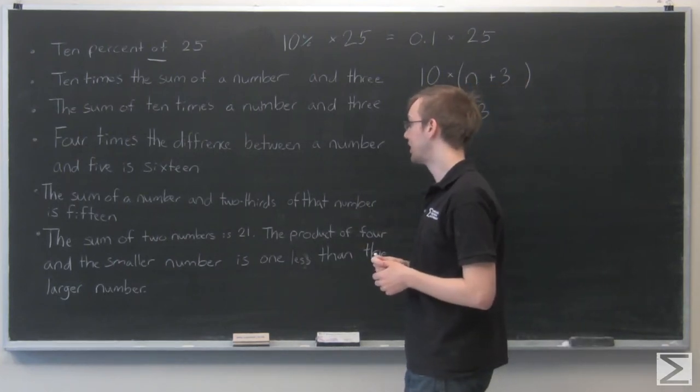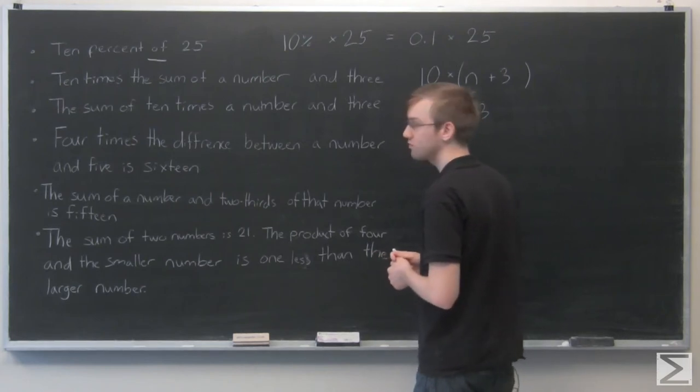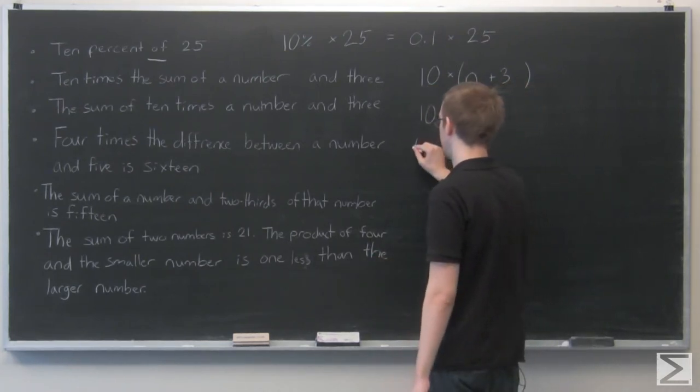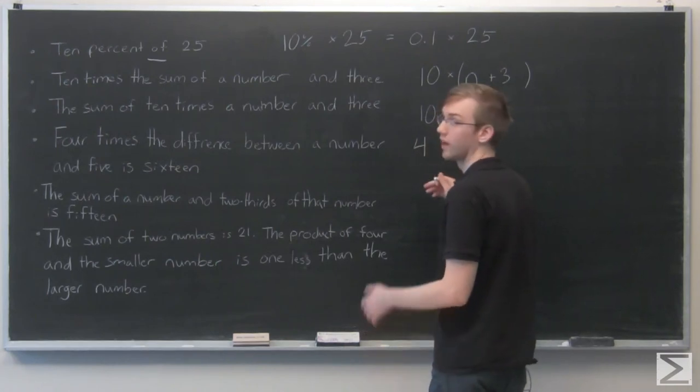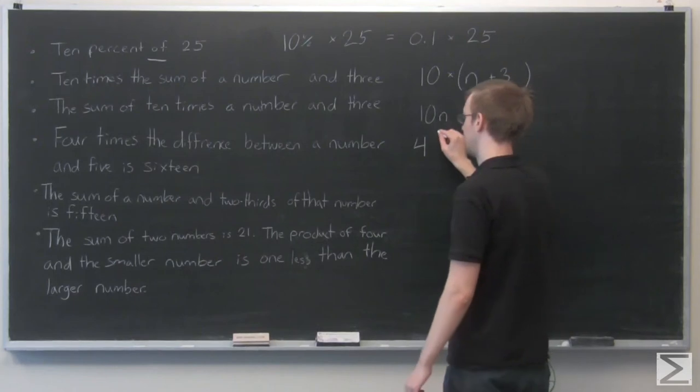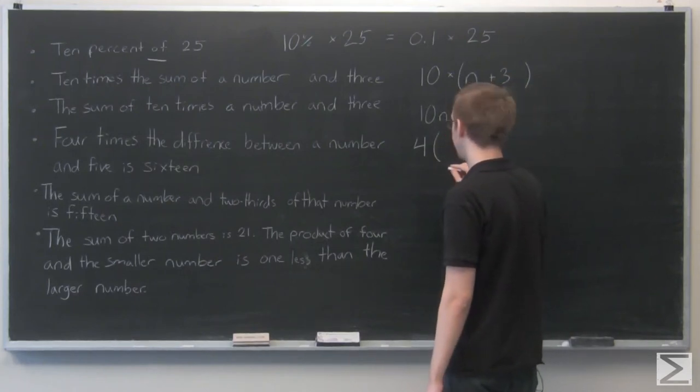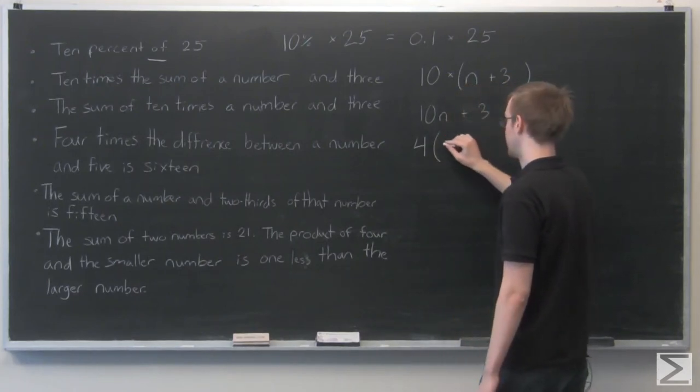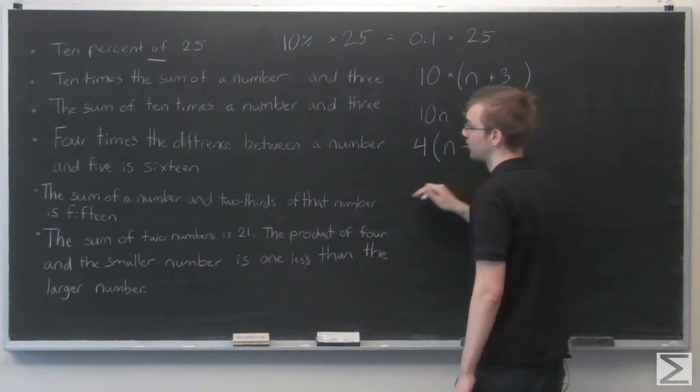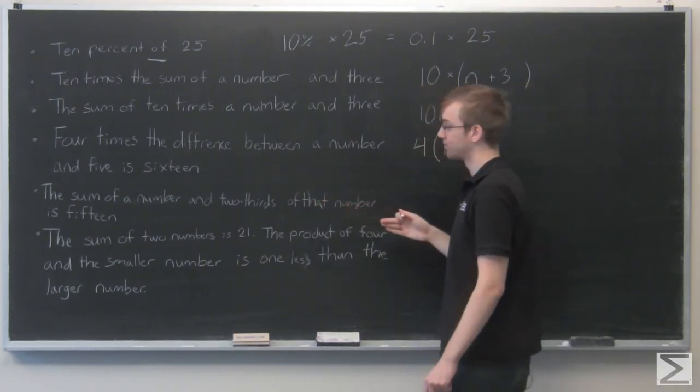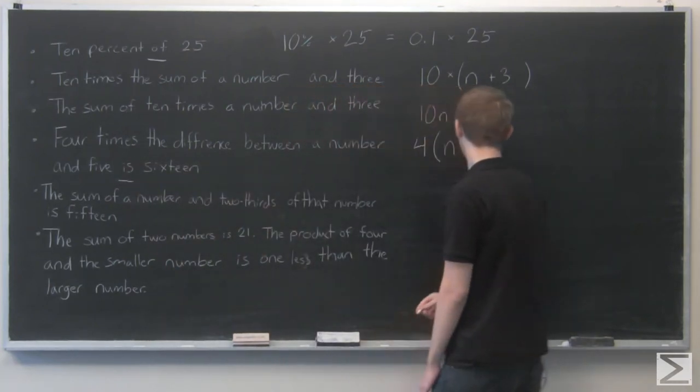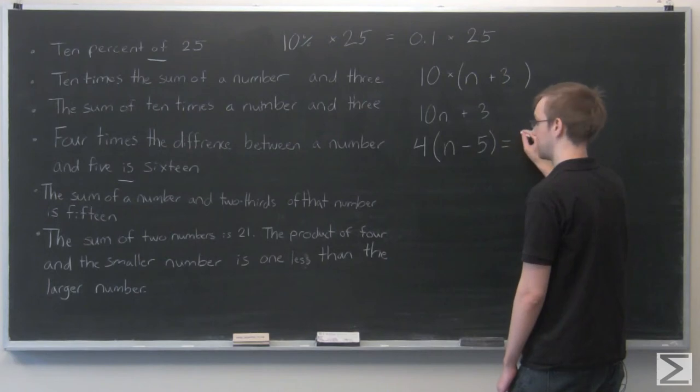Next one: Four times the difference between a number and five is 16. Let's try working left to right. Four times the difference between—okay, so let's stop and say there's probably going to be a parenthesis here. The difference between a number and five, so that's going to be a number minus five. Remember we said the difference between is subtraction. And here's our keyword 'is,' that means equal to 16.